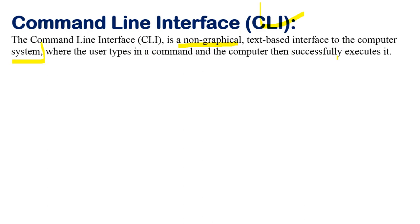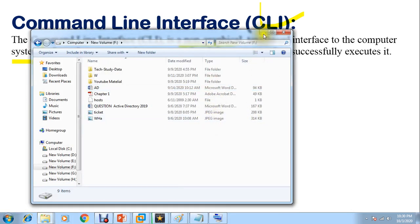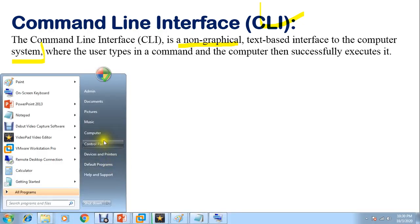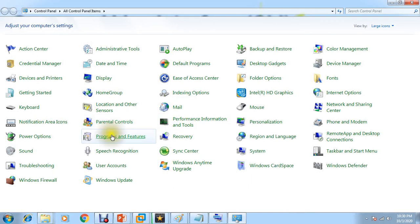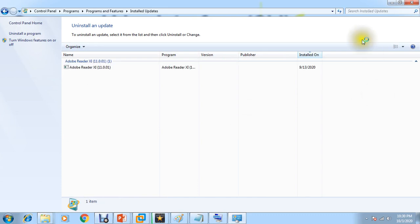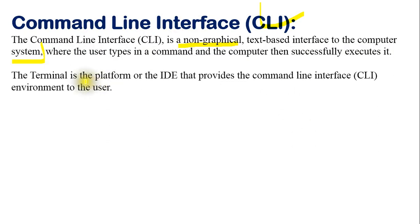For example, in Windows I can easily open things and navigate - this is called graphical user interface. In CLI mode you will not get that kind of experience. The terminal is the platform or environment that provides the command-line interface to the user.